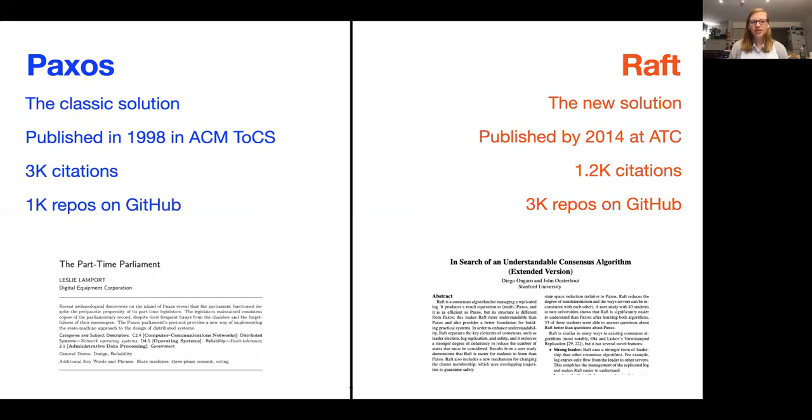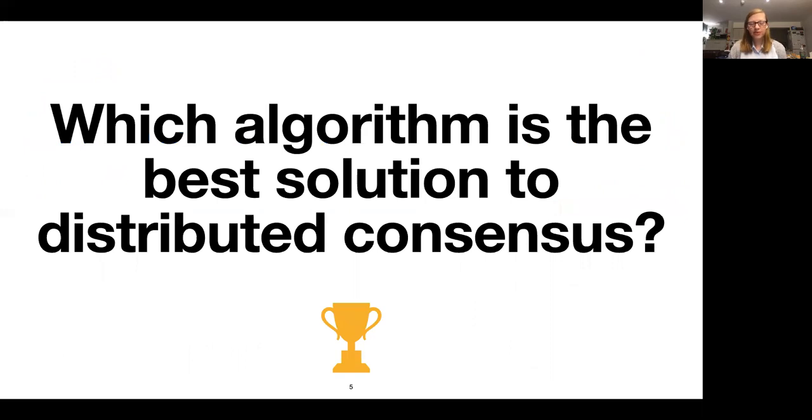Given that the community is divided between these two algorithms, the question naturally arises of which of these two algorithms is the best. Which algorithm should we be using? Should we be using Paxos or should we be using Raft?